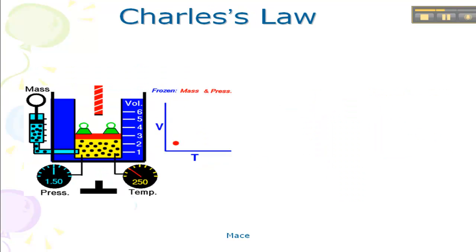Let's look at Charles's Law now. So notice in this one, we're keeping the pressure constant. We're also keeping the mass constant. We are increasing the temperature, and we're looking at what that does to the volume. So notice that we have a straight line here, and it's increasing.